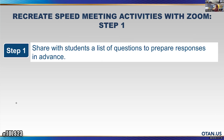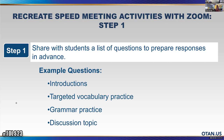Step one: share your list of questions with students in advance — maybe it's a dialogue you want them to practice. Share it with them, go over some practice, and let them think of their answers. Examples could be working on self-introductions, targeted vocabulary practice, grammar practice, or whatever discussion topic or unit theme you'd like. These could all work for creating speed meeting activities.